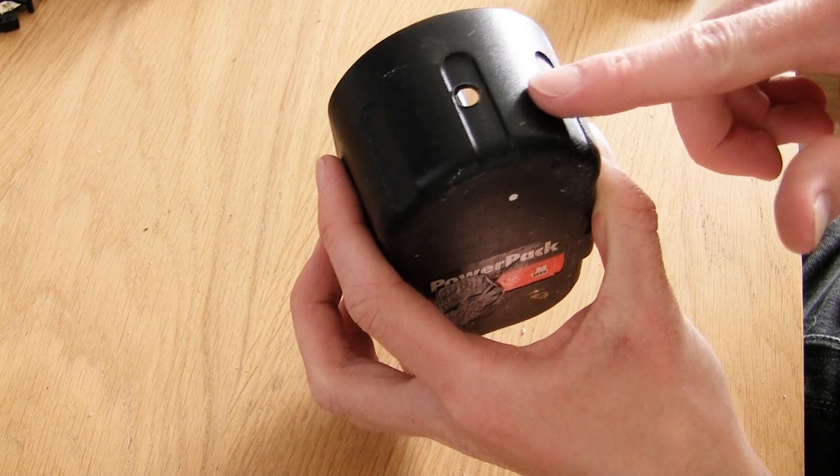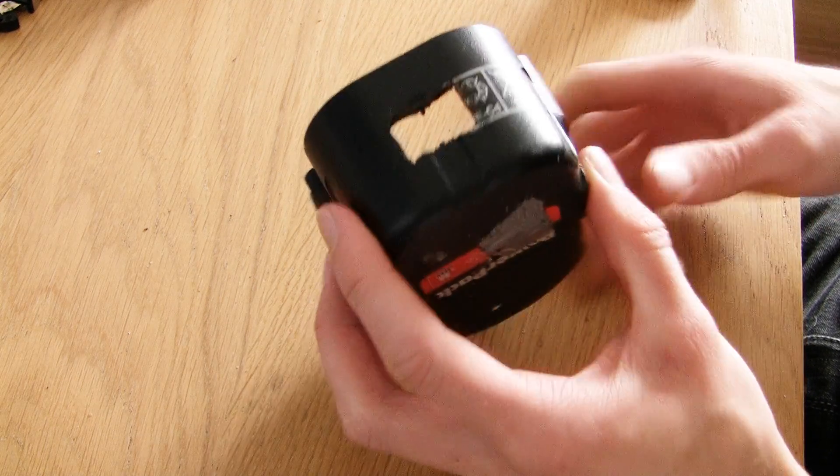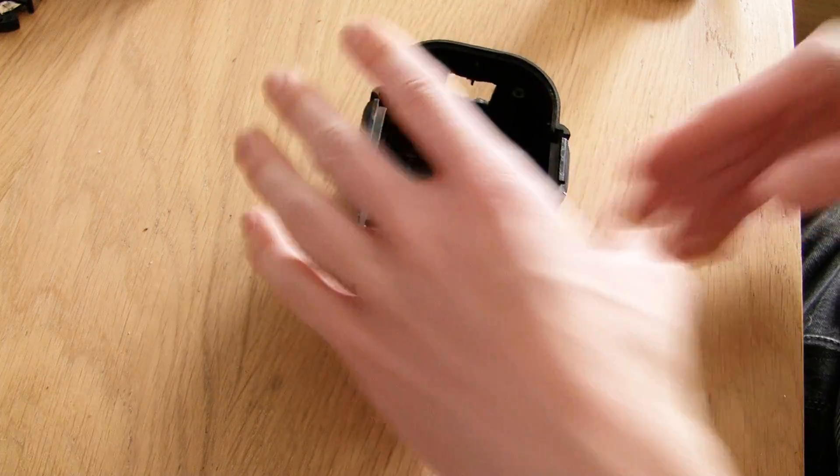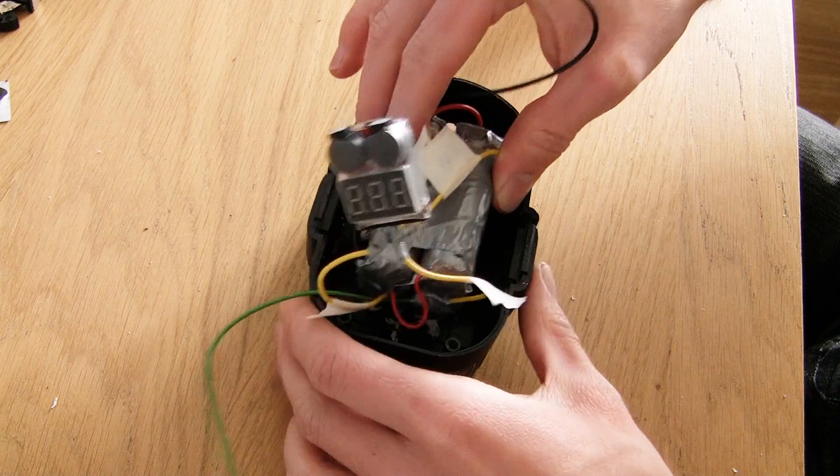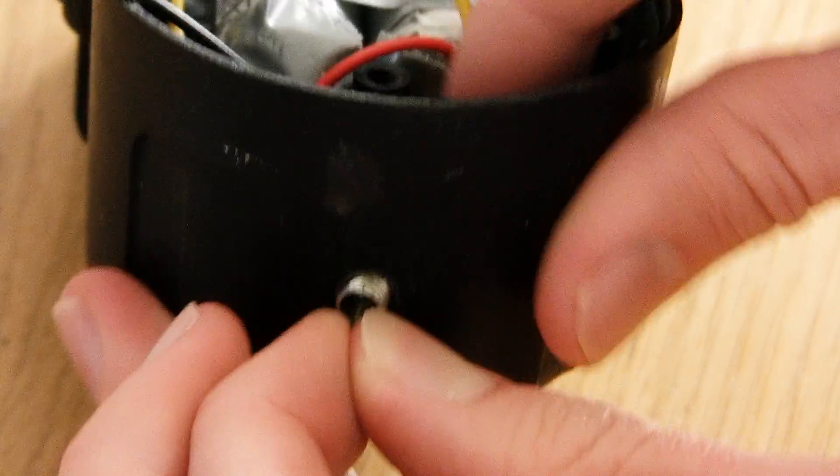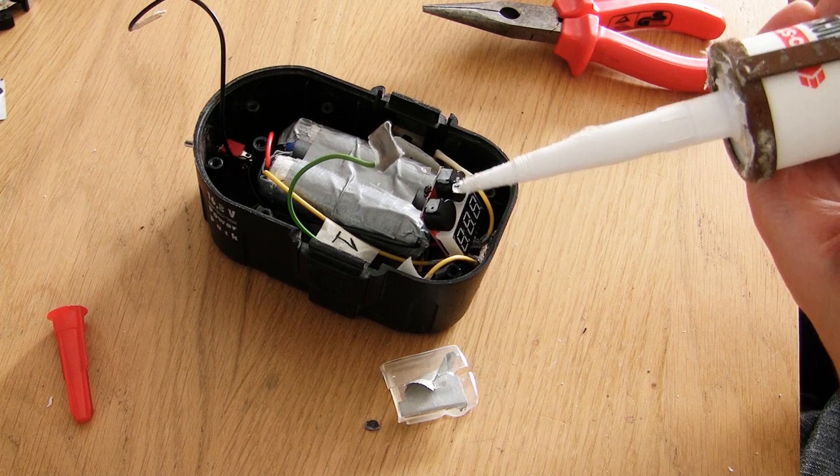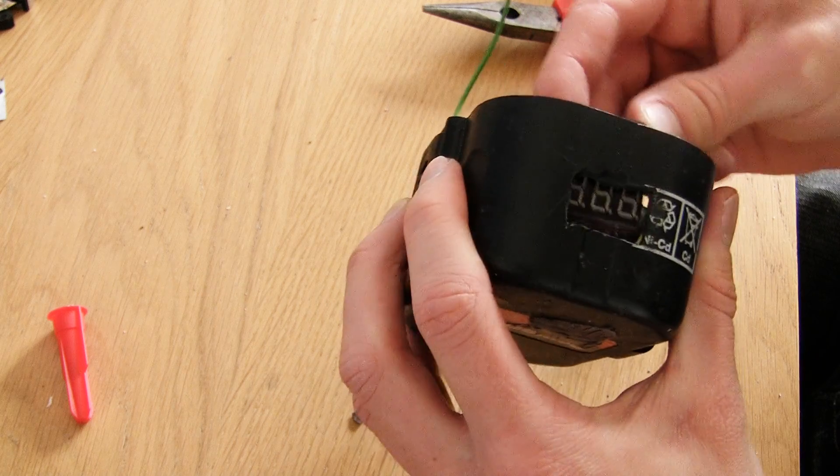Cut a hole in the front of the casing for the switch and cut a square at the rear for the display of the voltage alarm to be seen through. Use plenty of strong glue to stick the batteries inside the casing and pull the switch through its hole tightening its nut with some pliers. Add some glue to the voltage alarm and stick that in place as well.